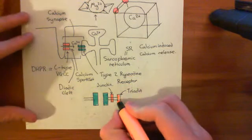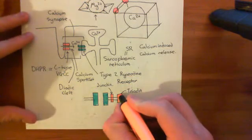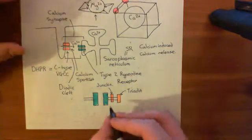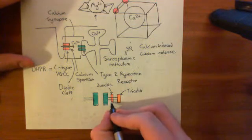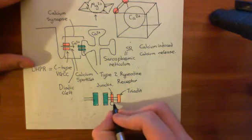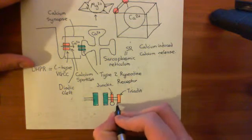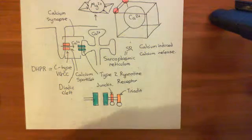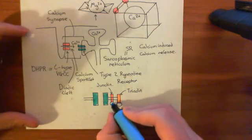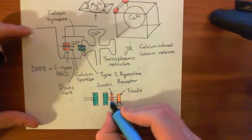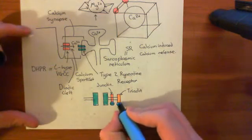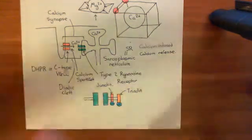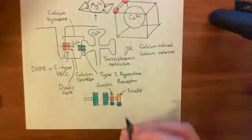Both junctin and triadine also bind to another protein known as calsequestrin. We'll have junctin in red and triadine in orange. Calsequestrin, which I'll have in blue, then binds to calcium.